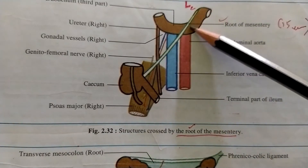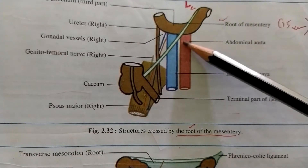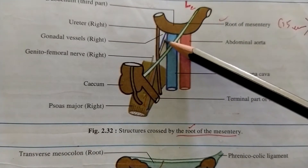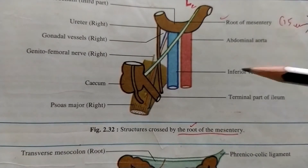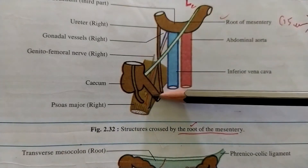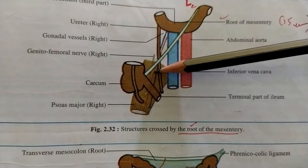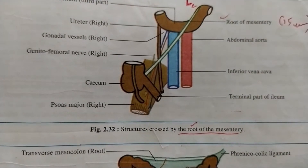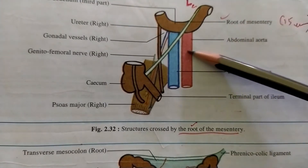What are the structures that cross the root of the mesentery? You can see the third part of the duodenum, the abdominal aorta, inferior vena cava, and also the gonadal vessels — the right-sided gonadal vessels. In the case of males, it is the testicular artery; in females, it is the ovarian vessels — both artery and vein. Also, there is a tubular structure called the ureter — the right-sided ureter is also crossed by the root of the mesentery. There is also the psoas major muscle and the right-sided genitofemoral nerve. This question is invariably asked in exams: what are the structures that cross the root of the mesentery?